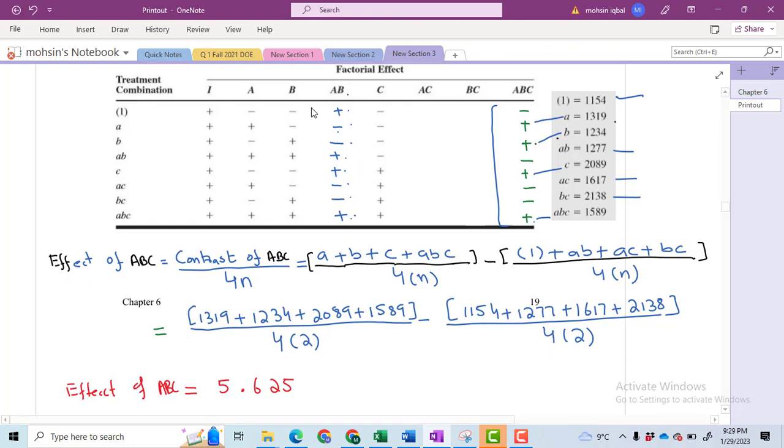So in summary, I have to first insert all of these signs for the columns for which I have information: AB, AC, BC, and ABC. Based upon these signs, we have to compute all of the contrasts and then effects, and after that we have to compute the sum of squares.